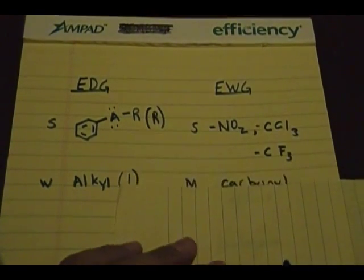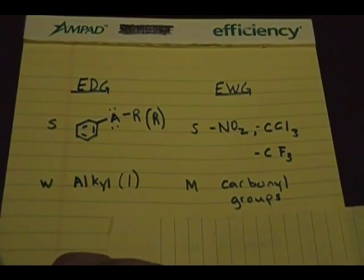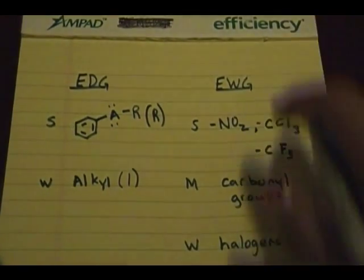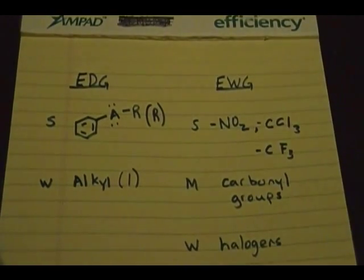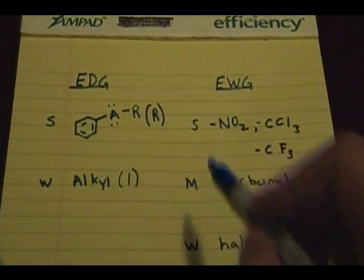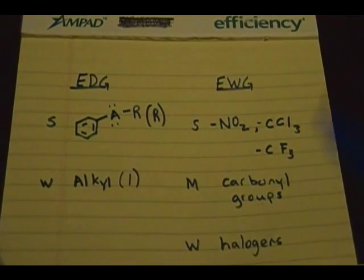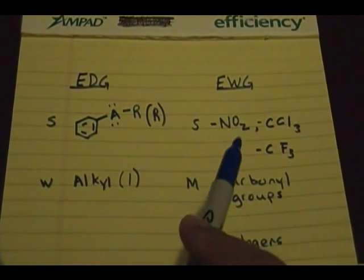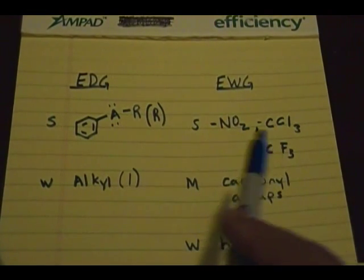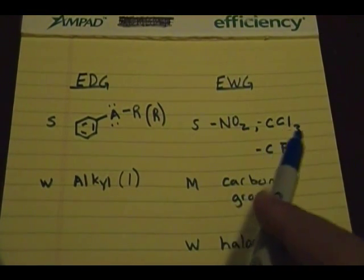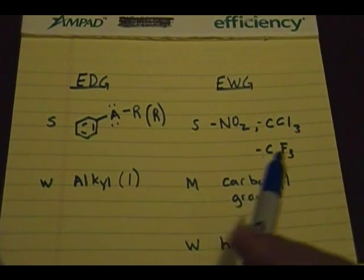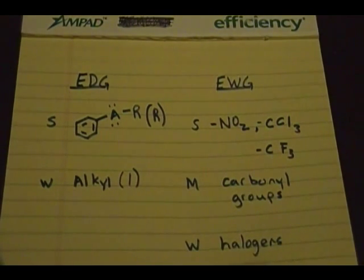Now let's go to electron withdrawing groups. The strong electron withdrawing groups are NO2, CCl3, and CF3 — those are considered strong electron withdrawing groups.